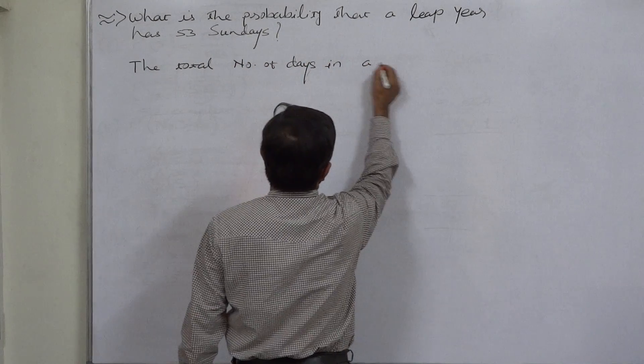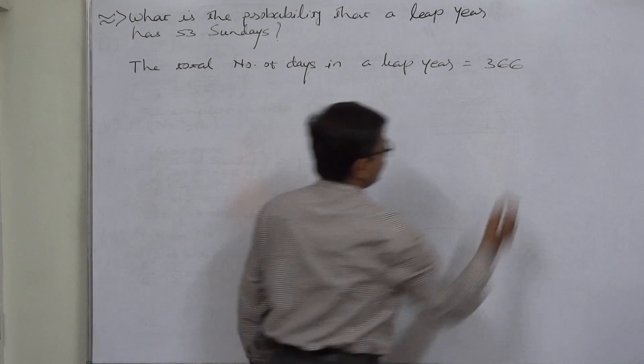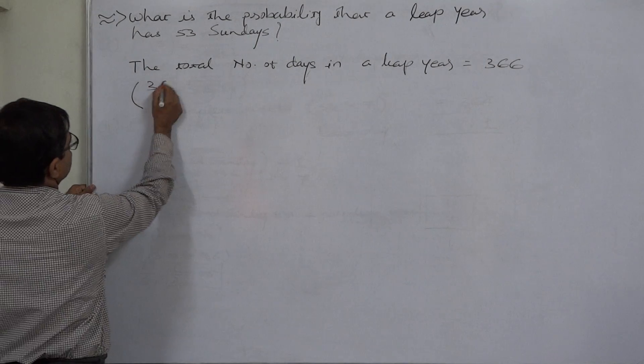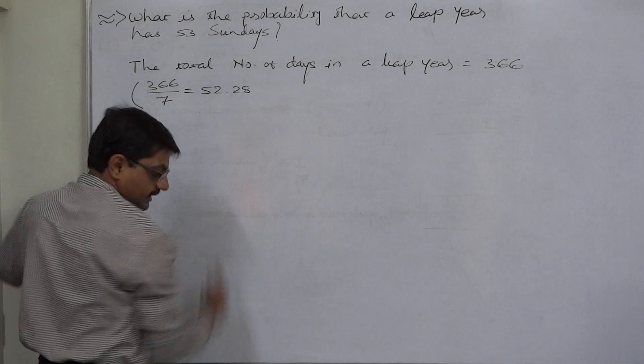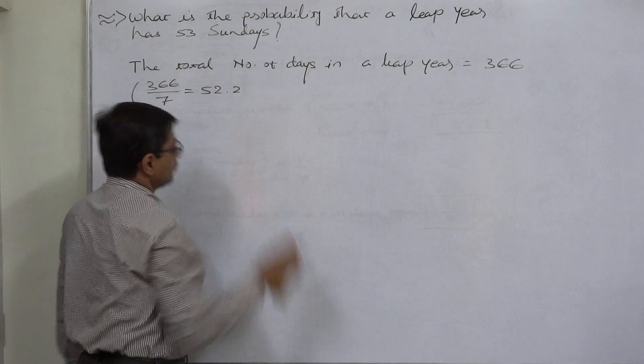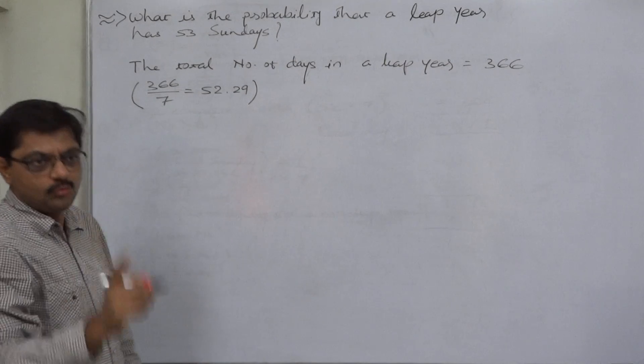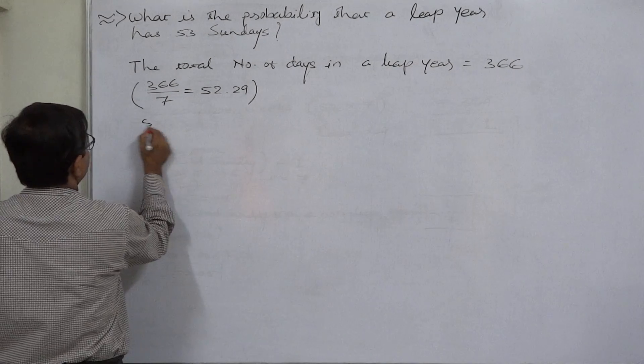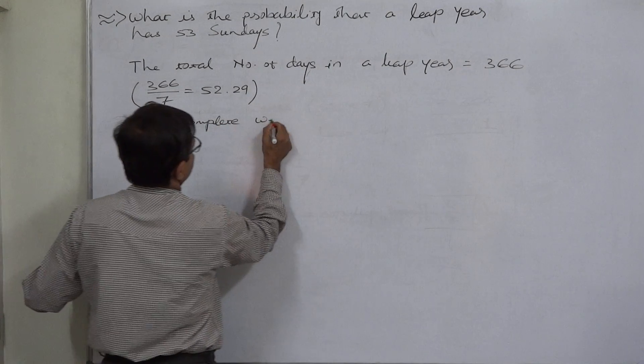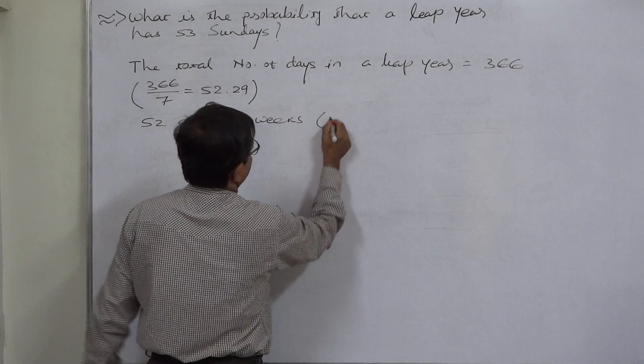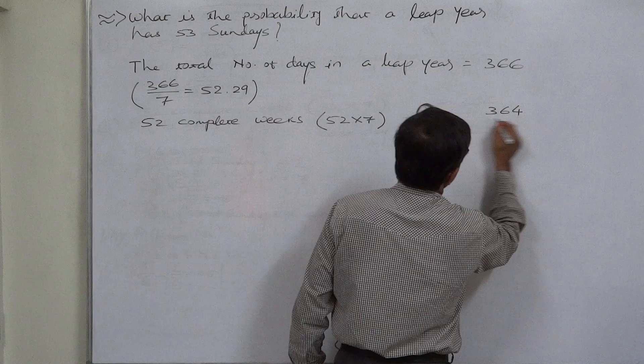The total number of days in a leap year is 366, that we all know. Again divide 366 by 7, that will give you 52.29. So 52 complete weeks are there. 52 multiplied by 7, it comes to 364.